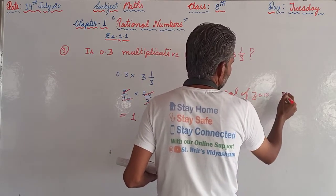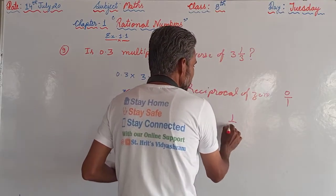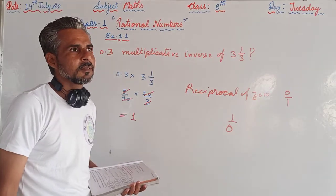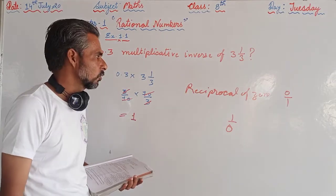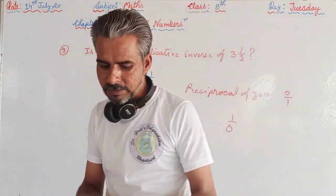That is 0, 1 upon 0, which is undefined. So 0 is the only number, only rational number which is not having any reciprocals.